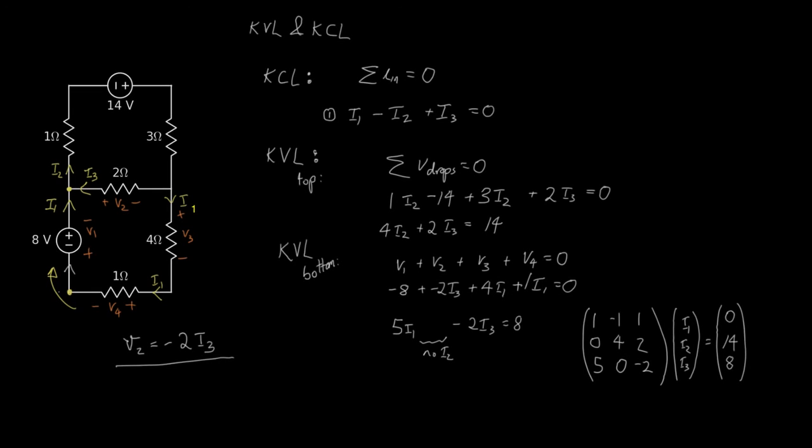And the result from our IPython notebook shows us that I1 is 2 amps, I2 is 3 amps, and I3 is 1 amp. Thank you so much.